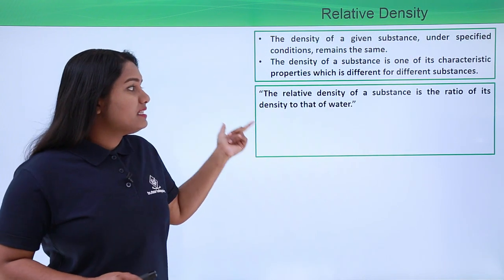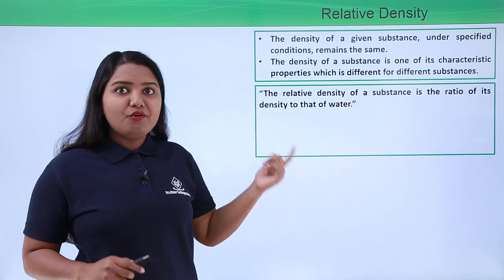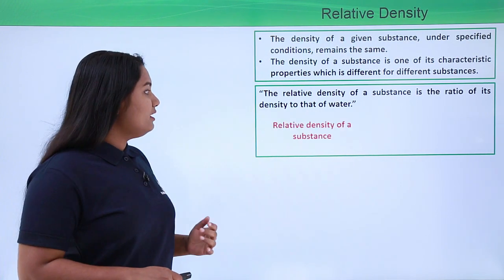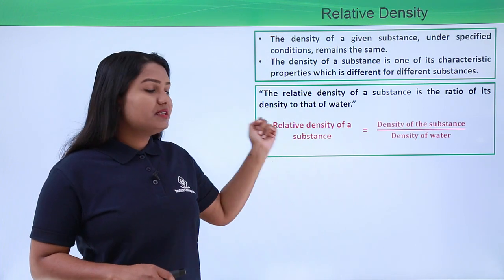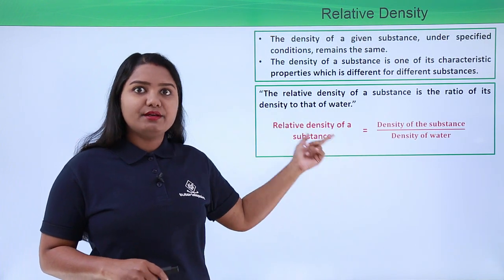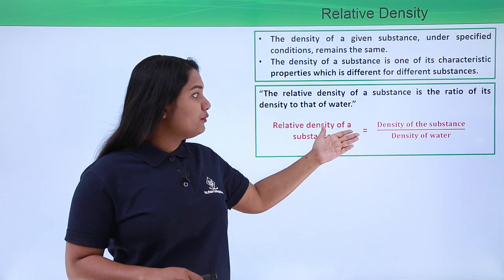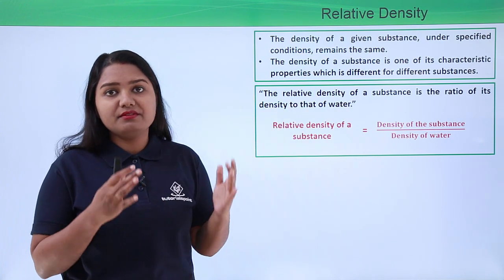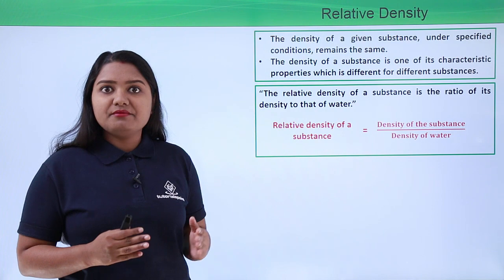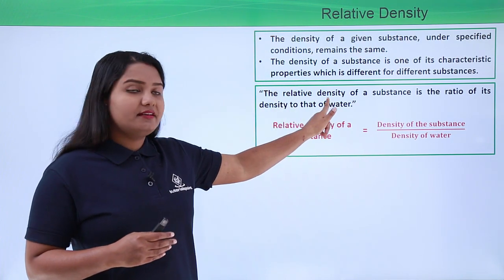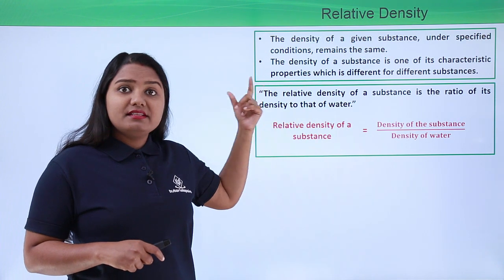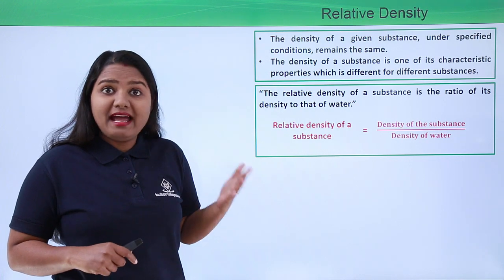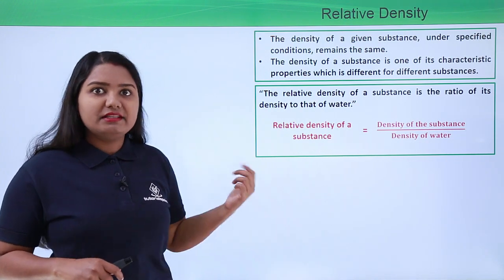The relative density of a substance is the ratio of its density to the density of water. So the formula is: relative density of a substance equals the density of the substance divided by the density of water. What we are doing here is finding the density of the substance with respect to water — we are comparing it with the density of water, and that is why we use the term relative density. It is the density of a substance related to, or as compared to, water.